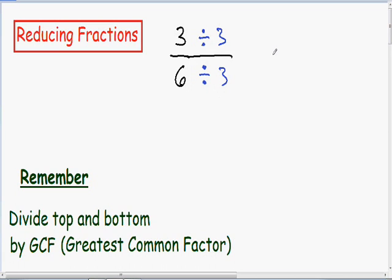And now we can reduce or simplify this quite easily. In the numerator, we have 3 divided by 3, which is just 1. And in the denominator, we have 6 divided by 3, which is just 2.